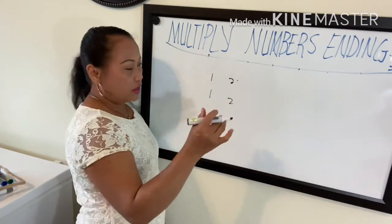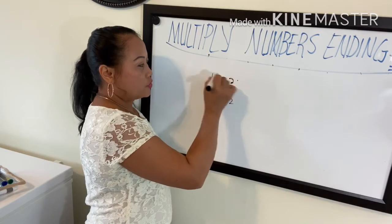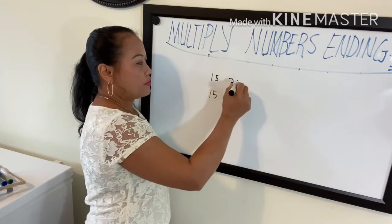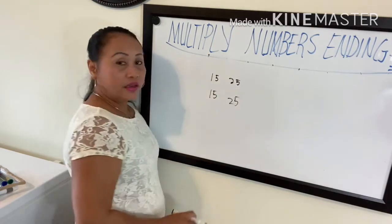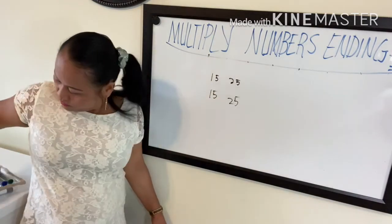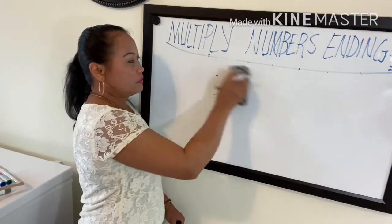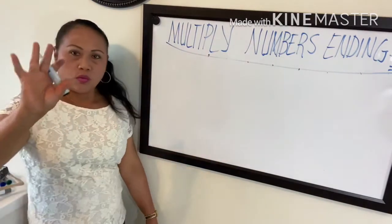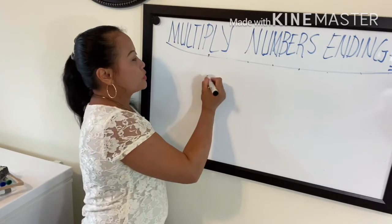The second number should always be five — five, five, five, five. That's it, it's easy! Let's do one more review before I close.